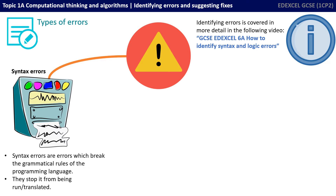There are three types of errors you need to be aware of. The first are known as syntax errors. Syntax errors are errors which break the grammatical rules of the programming language, so they stop the program from even being run or translated. This means that syntax errors are also the easiest to spot, as your program won't even compile or run successfully, and typically your IDE will tell you where the syntax error is and possibly even suggest a fix.